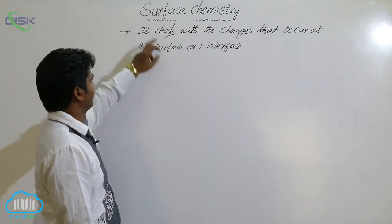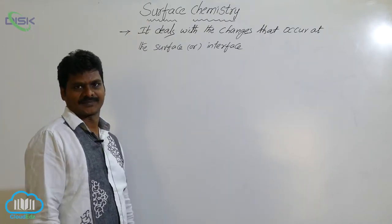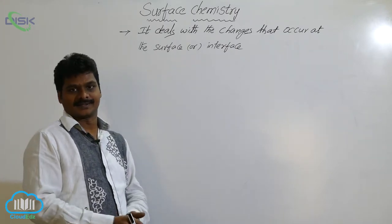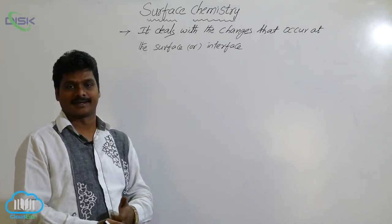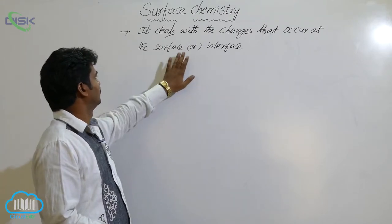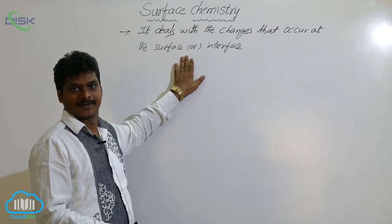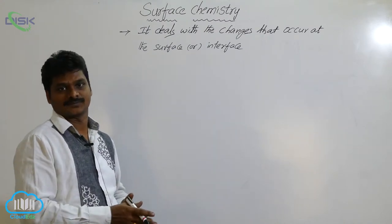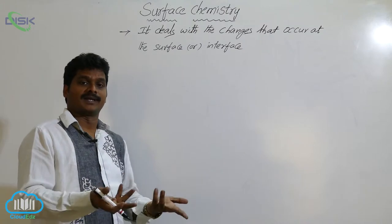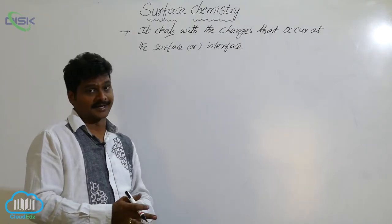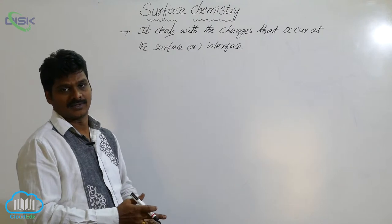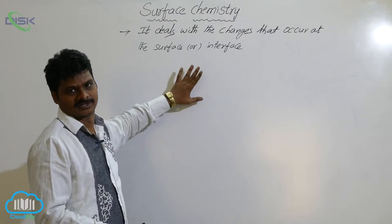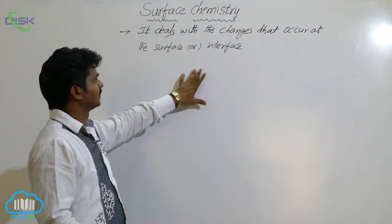Today I am going to discuss about surface chemistry. Surface chemistry is a part of second year intermediate chemistry. In surface chemistry, we deal with surface phenomena — there are so many processes that occur at the surface or interface, and about those changes we mainly focus in this chapter.